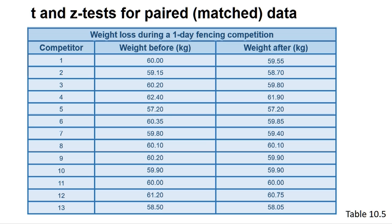The size of the before and after samples is 13 individuals and so we would use a t-test. For a larger sample of 30 or more values, it is common practice to use the z-test. However, when the sample size is more than 30, the z- and t-tests give very similar outcomes and both can be used.